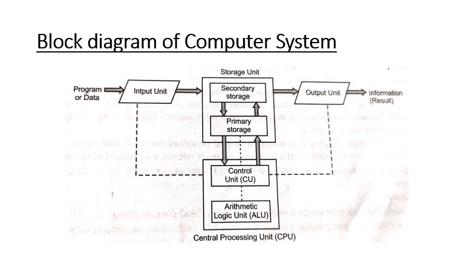Now let's look at the block diagram of the computer system. It is divided into four parts: the first is the input side, the last is the output side, and in between there is a storage unit and a central processing unit — the CPU. On the input side, all programs and data are fed in. On the output side, we get the information as a result on our screen. The storage unit is of two types: secondary storage and primary storage. The CPU is also divided into two types: the Control Unit and the Arithmetic and Logic Unit.